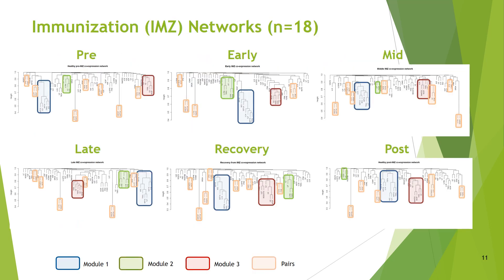This slide shows the resulting networks for each time point during immunization. Three larger modules and seven pairs appear rather consistently throughout this process. The larger modules are displayed in blue, green, and red respectively, while the pairs are in pink. During the early phase, few pairs do not appear, and still, in the healthy post-period, two pairs are missing. This indicates that after recovery, the new baseline is not completely the same as the original baseline.